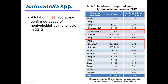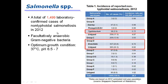Salmonella has a lot of serotypes, and among them Typhimurium and Enteritidis are the most commonly isolated serotypes. The frequent occurrence of cases is due to an association with the consumption of contaminated food such as eggs and egg products.